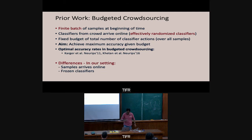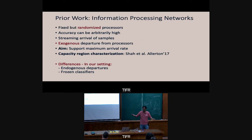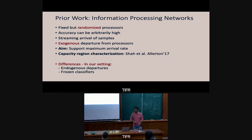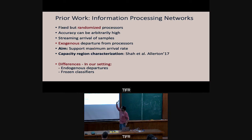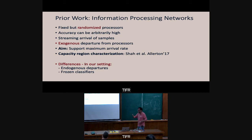Third, information processing networks: randomized processors in streaming settings, where you can call classifiers again and again, but with an exogenous departure process — at some point the image leaves by tossing a geometric coin — and you maximize the arrival rate. This is work by Virag Shah, Lara Masulier, and collaborators. All three lines of work are interesting, and our problem broadly sits in this space.